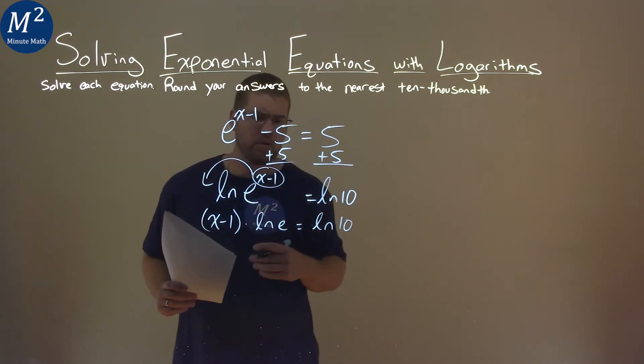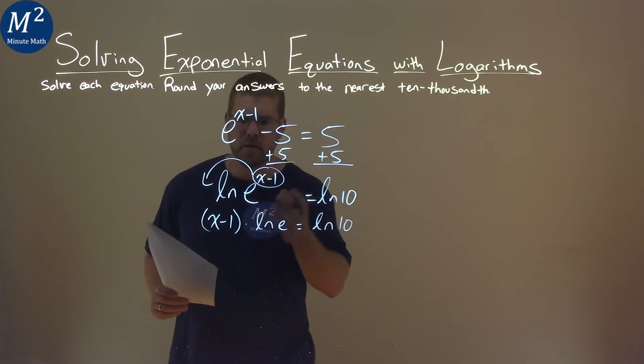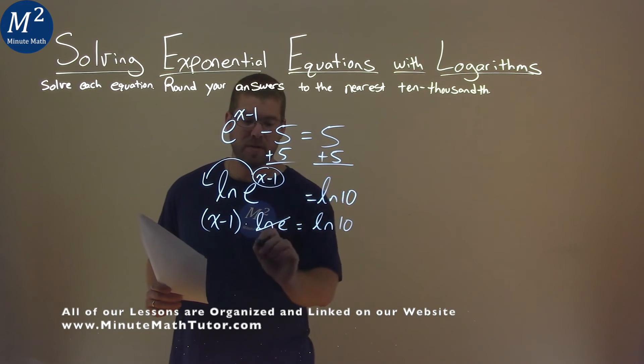But what's the natural log of e? Well, natural log of e is just 1. 1 times anything is itself. So really, don't need to write that. I'm going to have x minus 1 here is equal to natural log of 10.